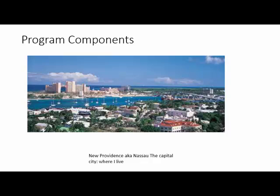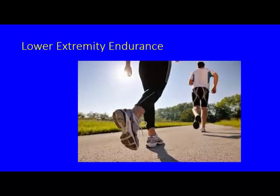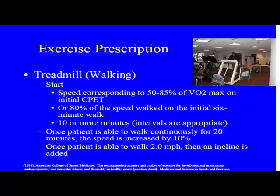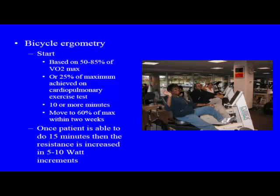The program components of pulmonary rehab address three major muscle groups: upper, lower, and ventilatory muscles. For lower extremity endurance, exercise is prescribed using a bike or treadmill at 50–85% of VO2 max or 80% of the six-minute walk speed. Patients start with 10 or more intervals; once able to walk continuously for 20 minutes, speed is increased by 10%. Once walking two miles, incline is added. For the bicycle, resistance starts at 25% of max and increases to 60% within two weeks, with resistance increments of 5–10 watts once 15 minutes can be sustained.